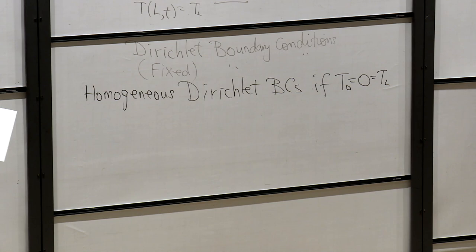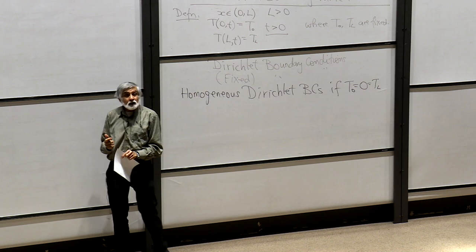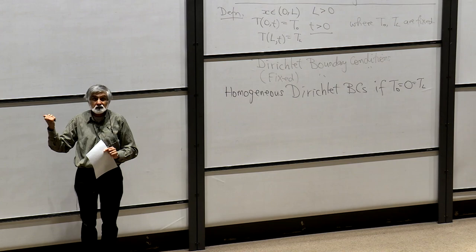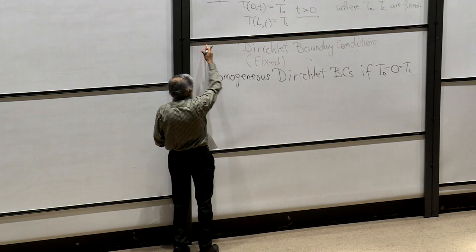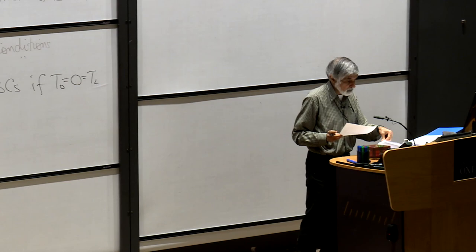So what that basically means is that at the end of the rod — you've got the rod — and at each end of the rod you fix the temperature. But you might also have the case where you have temperature flowing in or flowing out, and that's going to depend on the gradient. So before we go on to doing that, we have another definition: the directional derivative.